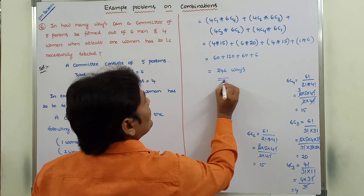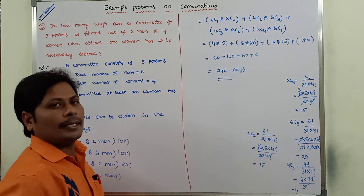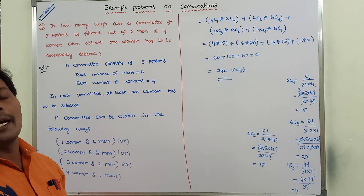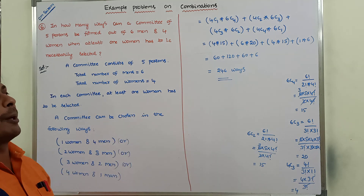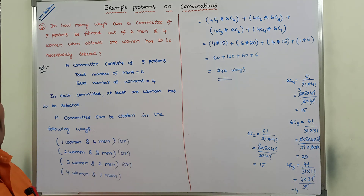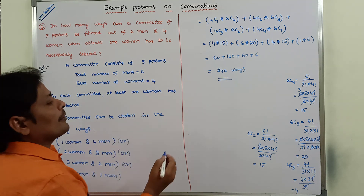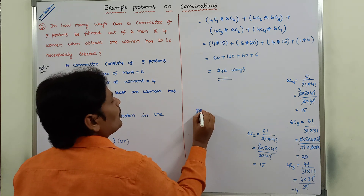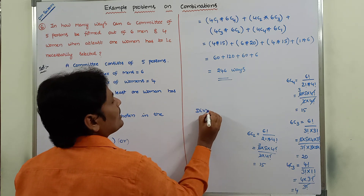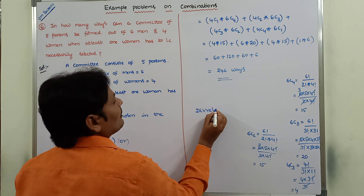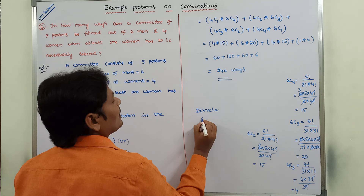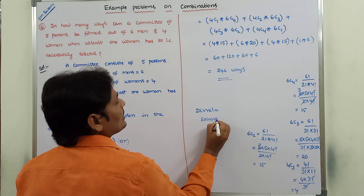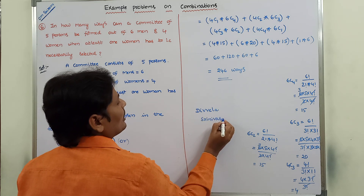So the answer is 246 ways. We can choose a committee of 5 members out of 6 men and 4 women when at least 1 woman has to be necessarily selected. This is the answer and this is how we solve the given problem. Thank you for watching this video. If you like this video, please share it with your friends and classmates, and please subscribe to my channel.